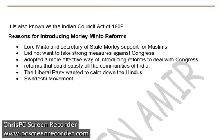The Liberal Party that had taken over in Britain in 1906 wanted more power to be given to Hindus and Muslims — to Indians — because they believed in giving rights to all people equally. So more privileges were to be expected in these reforms. The Liberal government asked the Viceroy to give such rules to the country which would not only please Muslims, who were already pleased since the Partition of Bengal and the Shimla Deputation, but also pacify the Hindus who had become furious as a result of the Partition of Bengal.